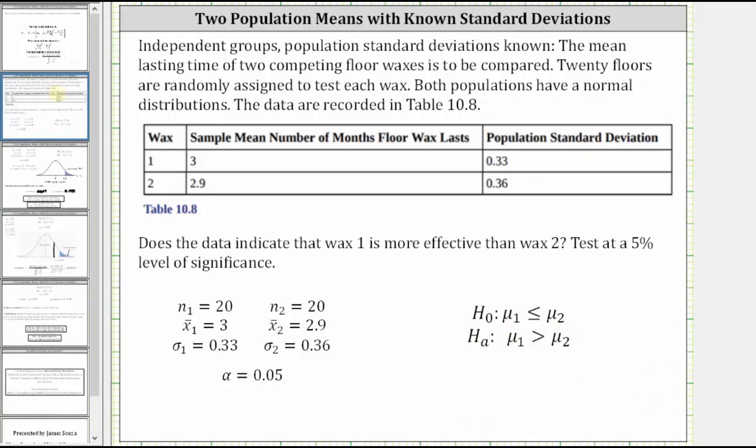We assume independent groups with known population standard deviations. The mean lasting time of two competing floor waxes is to be compared. 20 floors are randomly assigned to test each wax. Both populations have a normal distribution. The data are recorded in table 10.8 below.